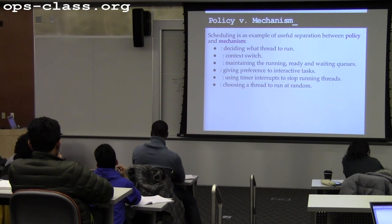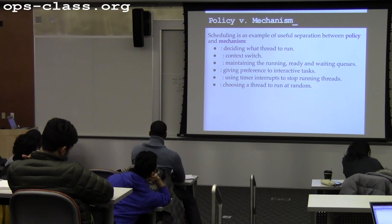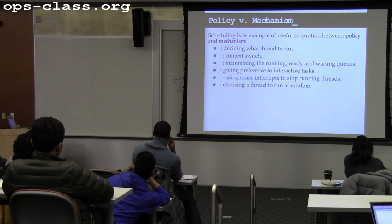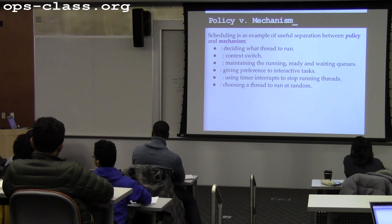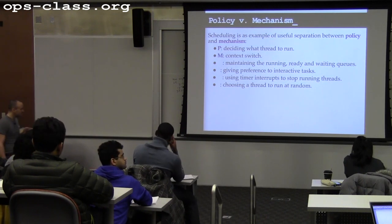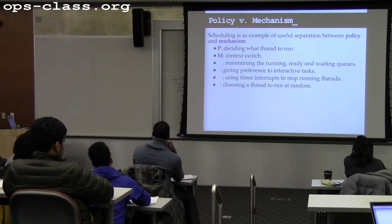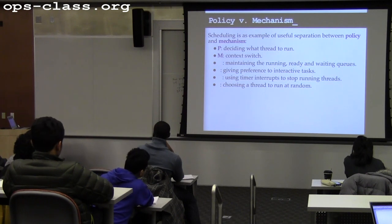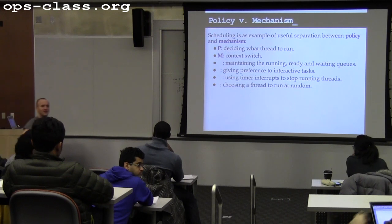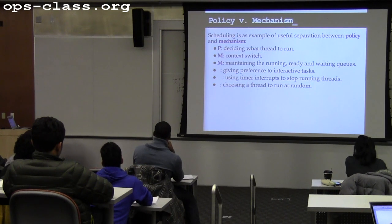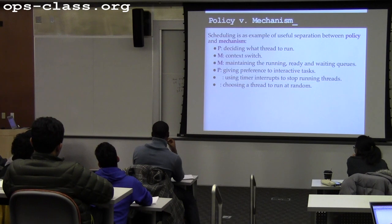Let's go through some examples: deciding which thread to run is a policy; performing a context switch is a mechanism; maintaining the running, ready, and waiting queues is a mechanism; and giving preferences to interactive tasks is a policy. Using timer interrupts to stop running threads is a mechanism, and choosing threads to run at random would be a policy.